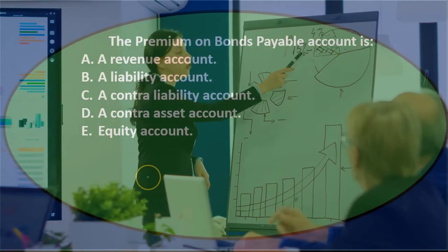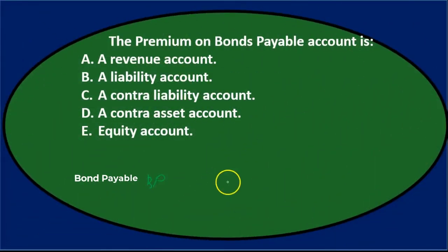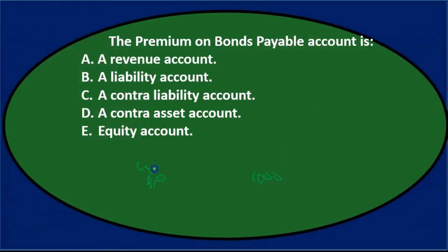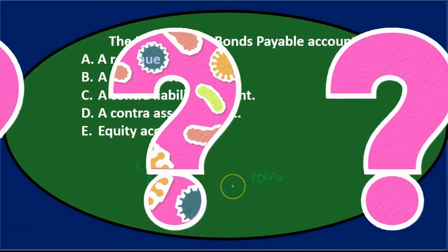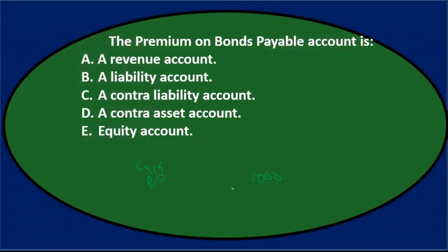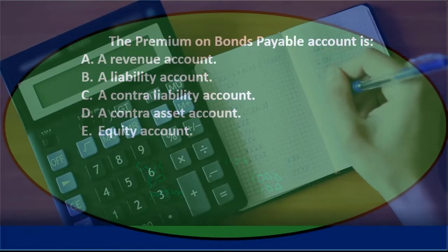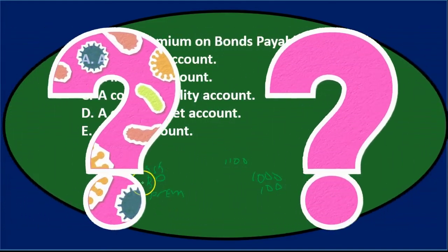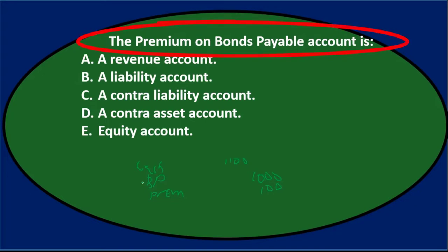The premium is created when we issue the bond. Say we have a thousand dollar bond payable — we credit the bond payable for 1,000. We're going to receive cash as the debit. If we get more cash than the face amount of the bond — say 1,100 — then we'd have a premium on the credit side. So the premium is a credit balance, linked to the bond, which is a liability we're going to owe in the future.